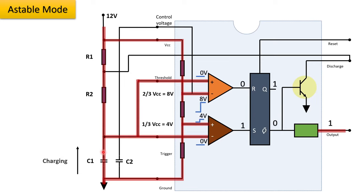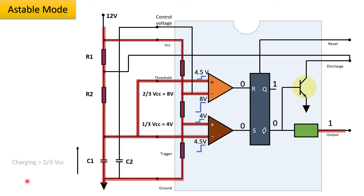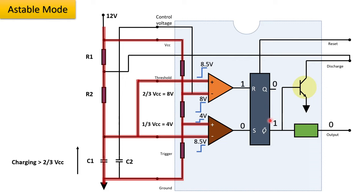Once the voltage across C1 increases to 1/3 Vcc, the trigger comparator output goes to 0. But this 0-0 condition makes no change in output, so IC555 remains in the high state. Once C1 reaches 2/3 Vcc, the threshold comparator output changes from 0 to 1. This 0 and 1 input to the flip-flop sets output to 0 and 1, activating the discharging transistor and making the IC555 output go to 0.